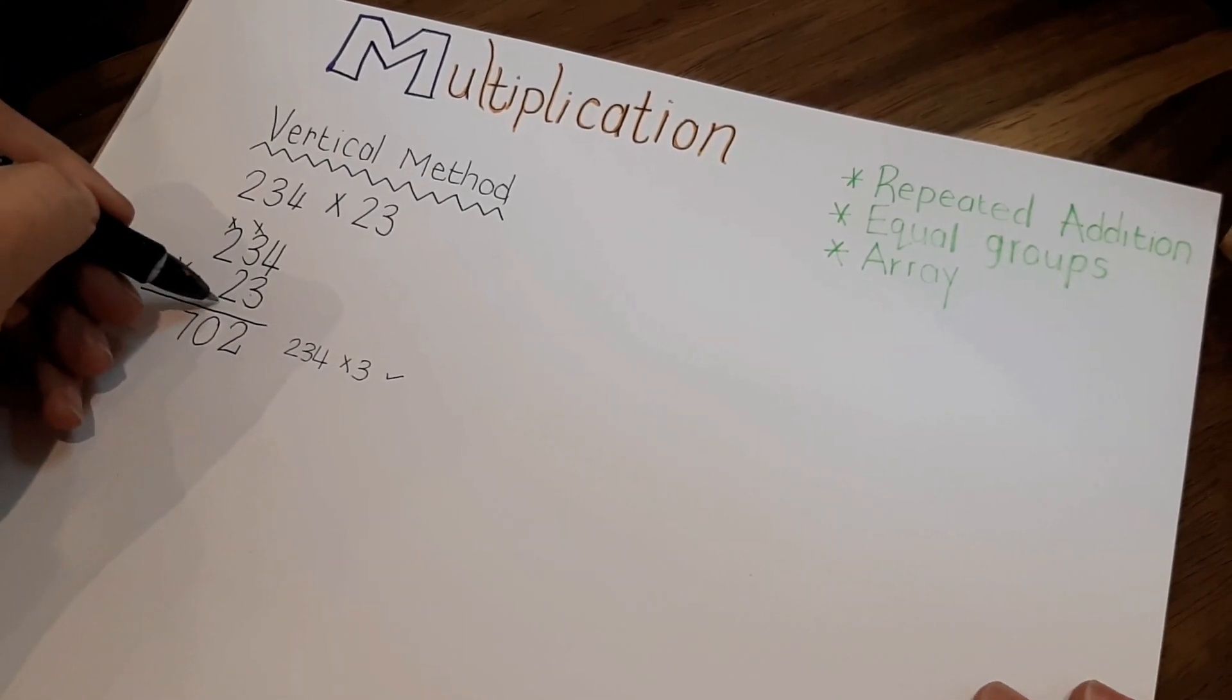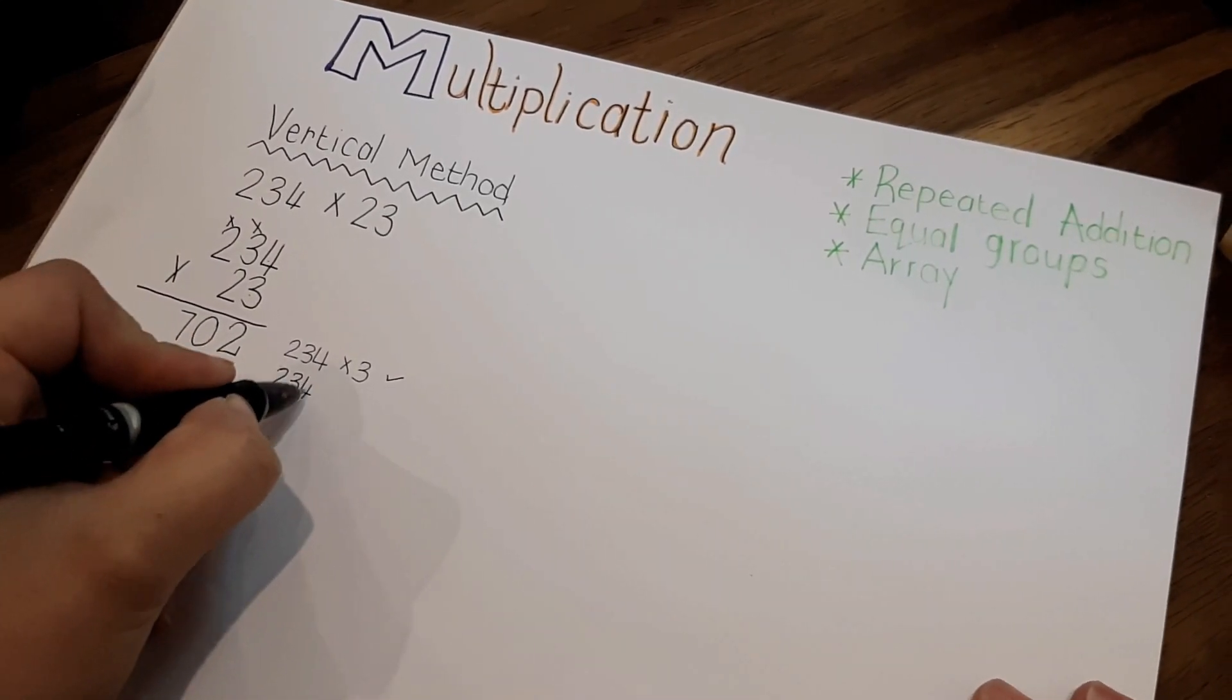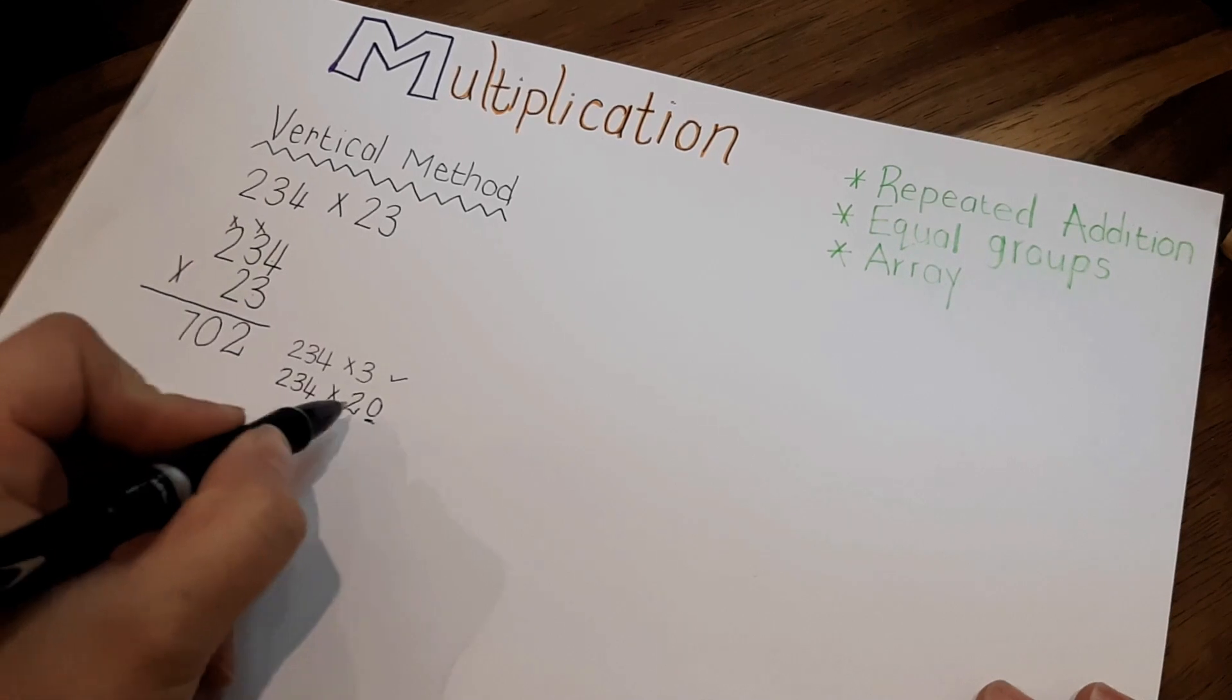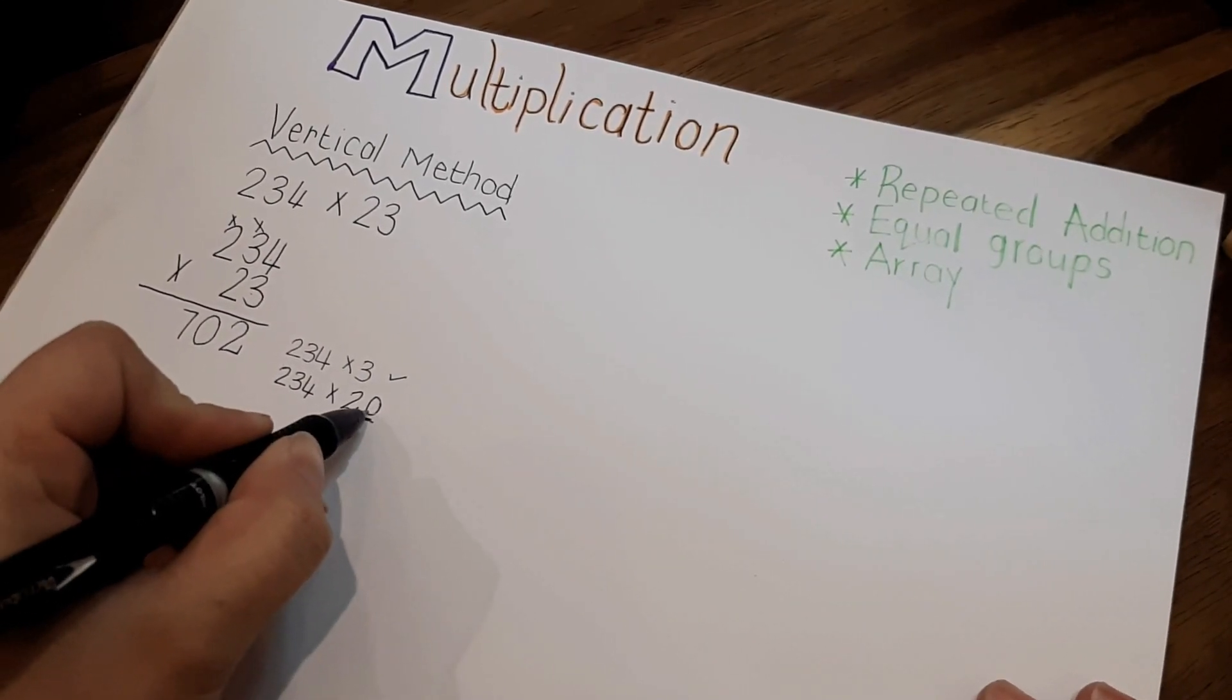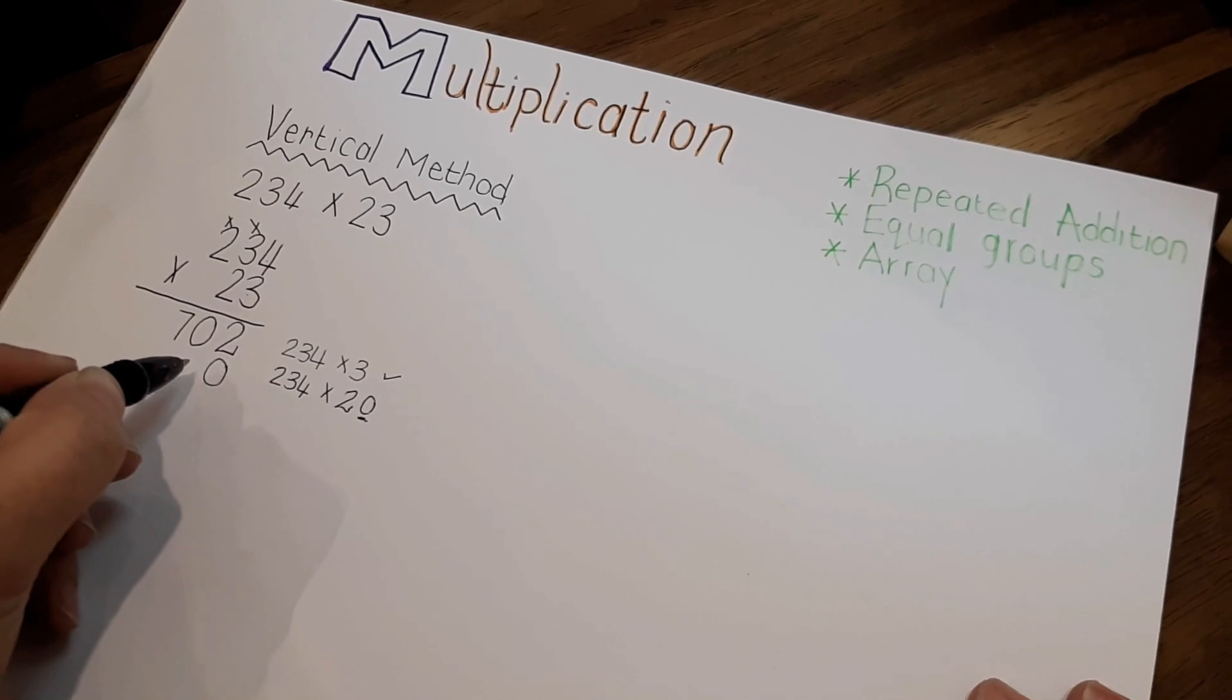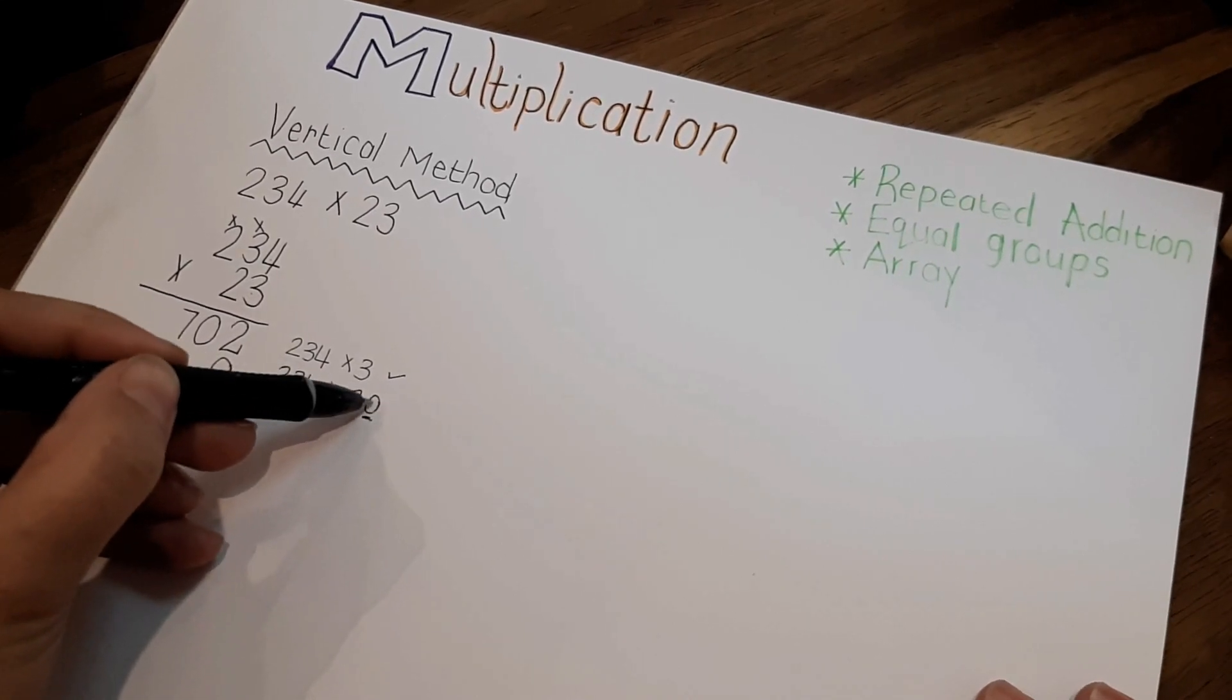Next is when we multiply with this 2, but it's very important for you guys to remember that that 2 is not a unit but it is a 10. So it represents 20, and most of you guys would know that when you multiply with a multiple of 10, your answer will always end on a 0. That's why we immediately write a 0 there. It's not a placeholder, it actually has a purpose there.